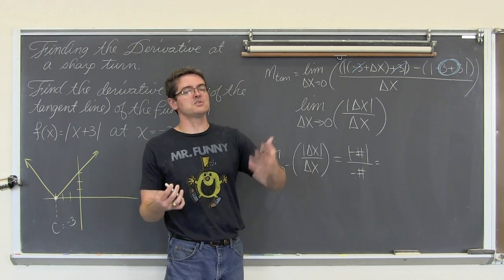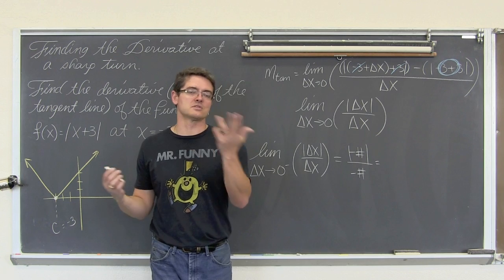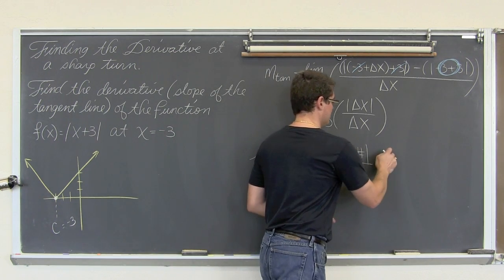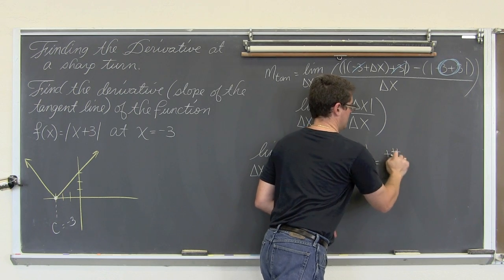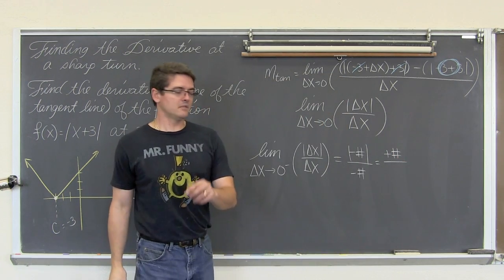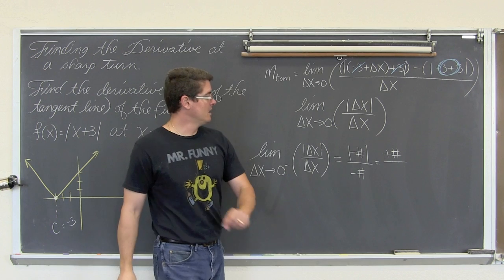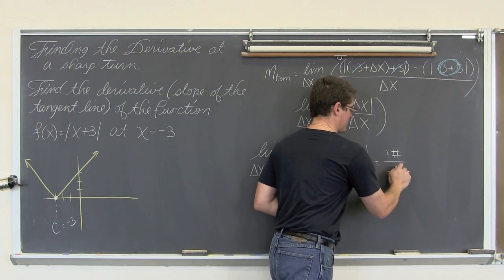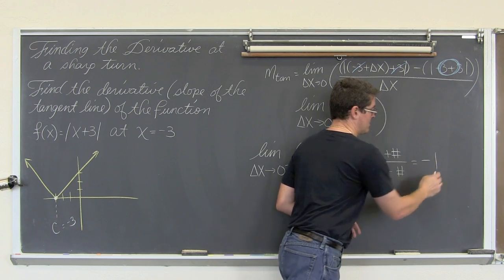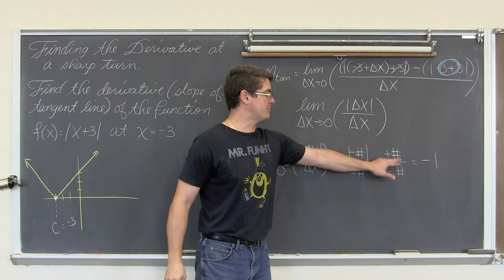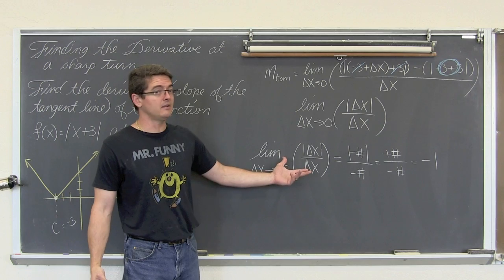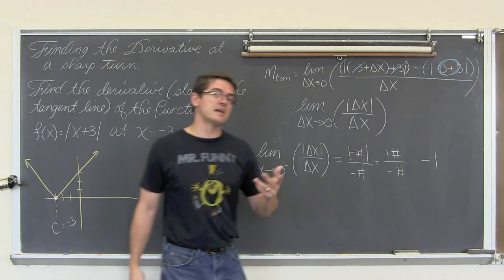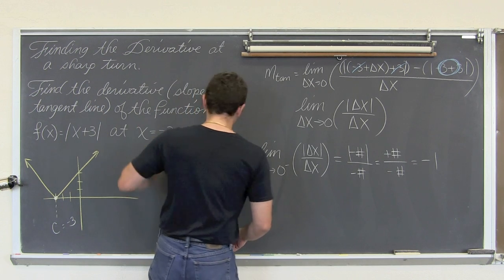Well what does an absolute value symbol do? It tells you how far a number is away from zero but we sort of just know it effectively gets rid of the negative sign. So this is going to be a positive number. The denominator does not have an absolute value function around it so it is going to remain negative and thus I am going to have a negative answer. And any time you take a number and divide it by itself, these are going to divide out and become one. And my limit is negative one.